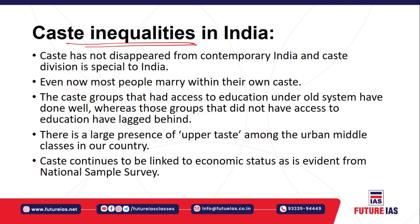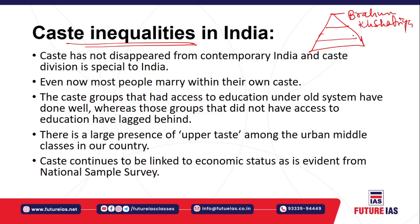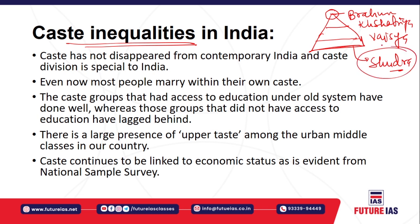In India, we have basically the fourfold Varna system. At the top level, we have Brahmin; at the second level, Kshatriya; at the third tier, Vaishya; and at the fourth level, Shudras. Shudras are considered untouchable and impure, while Brahmins are considered superior in the caste-based hierarchy. In between, there are thousands of castes.